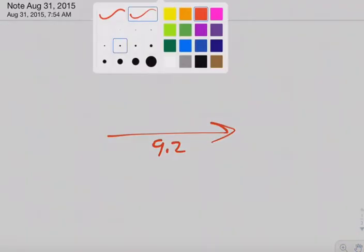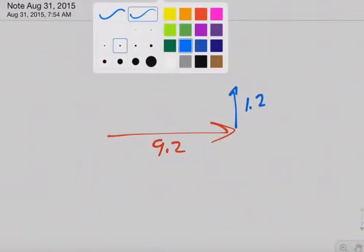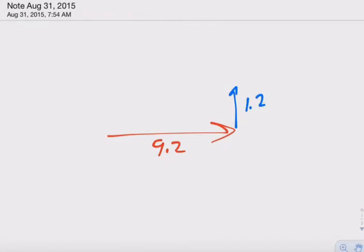And note that we're going to start off with a vector that is 9.2 centimeters east. And then we're going to add to that 1.2 north. And then to that we're going to add 2.9 south.